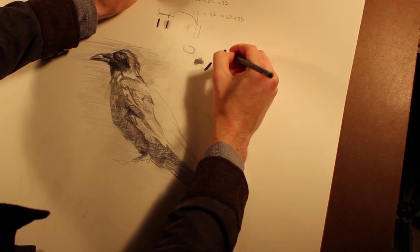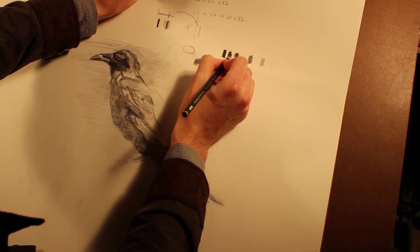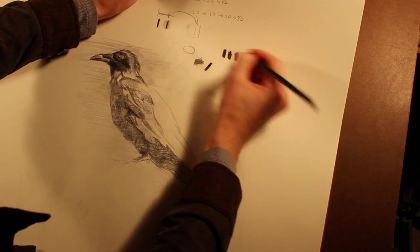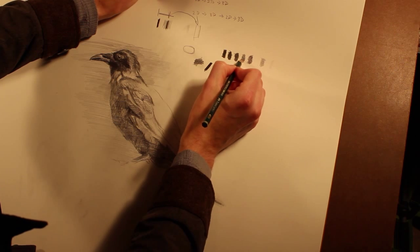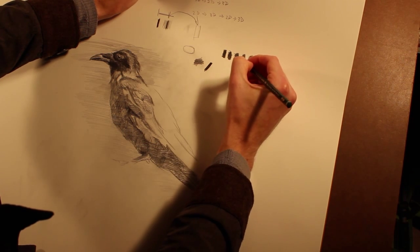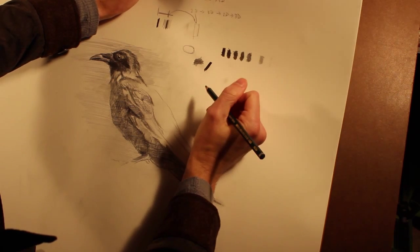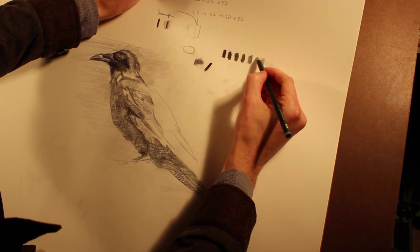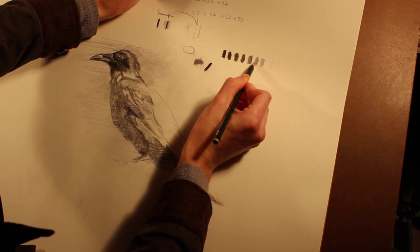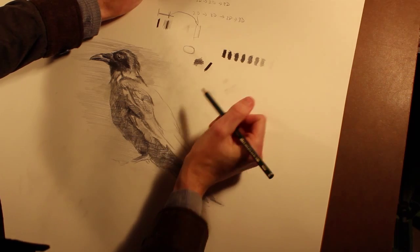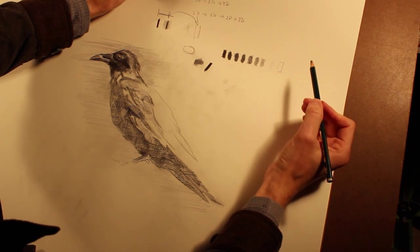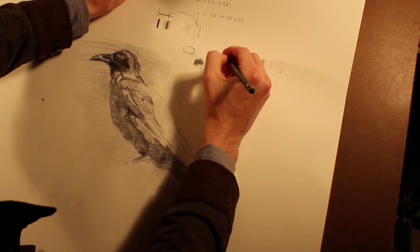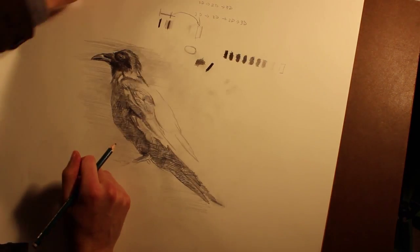Once you've begun to establish a value scale, obviously you can work values in really subtle ways. And in your drawing there's probably going to be hundreds if not thousands of different values. But this value scale gives you something to work off of. When you're drawing you'll constantly be referring to this value scale. So this is your dark and this one in here is your lightest light.